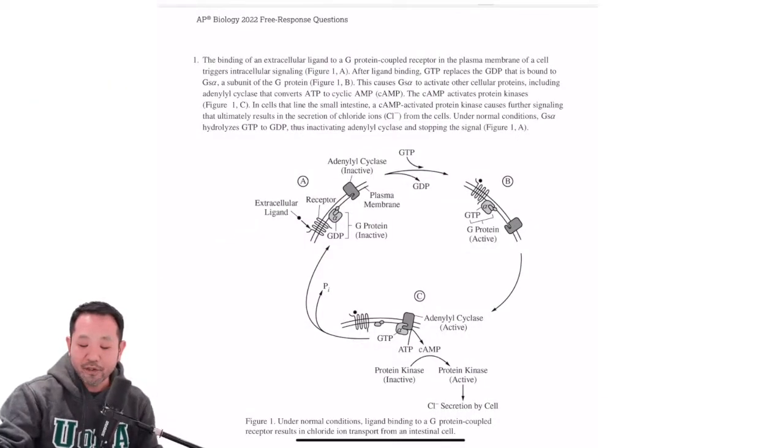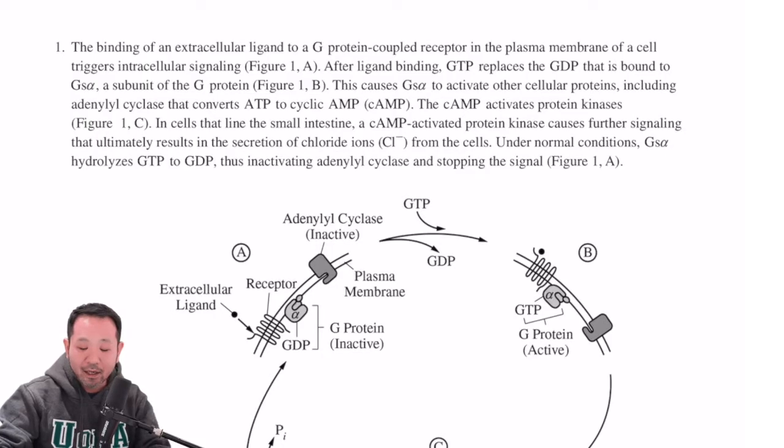In 2022, the first question dealt with a very familiar picture. It's about a G-protein coupled receptor, which if you remember from chapter 11, was a receptor type that allowed the ligand to activate a G-protein, which typically activated subsequent proteins within the cell's intracellular signaling pathway. So let's take a look at what they say. It says the binding of an extracellular ligand to a G-protein coupled receptor in the plasma membrane of a cell triggers intracellular signaling. After the ligand binding,